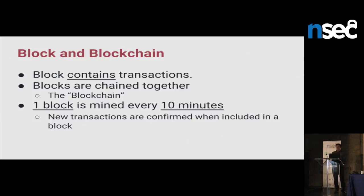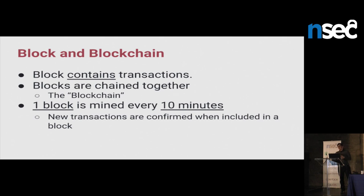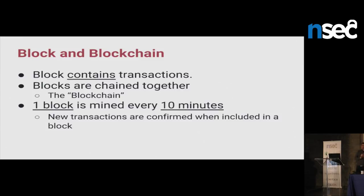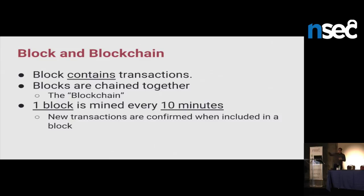For the block and blockchain: a block mostly contains transactions. When a transaction is created on the network, it is in the unconfirmed state. As soon as it's included in a block, it becomes confirmed. I know for Bitcoin experts you have to wait some blocks to be really sure, but for the purpose of this presentation, when a transaction is in the block, it's confirmed. The blocks are chained together and create the blockchain — the big registry of all transactions. A block is mined every 10 minutes, and new transactions included in the new block become confirmed and will be in the transaction history forever.